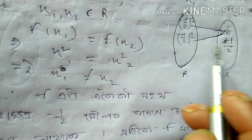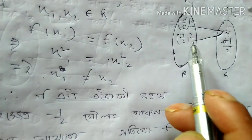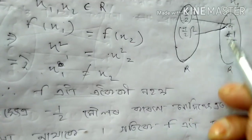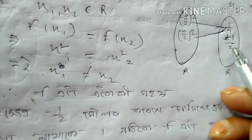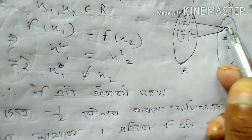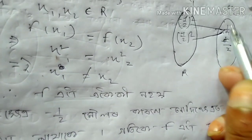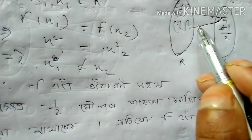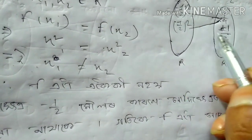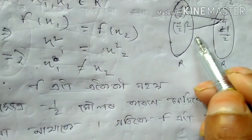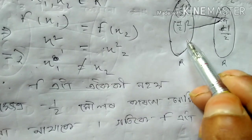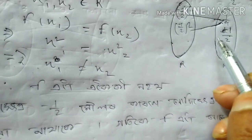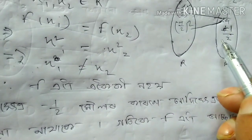The result is the same: minus 1 by 2. We have a rational number because the values are the same, giving minus 1 by 2.